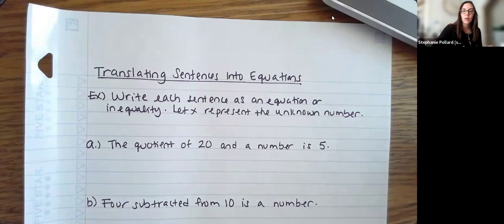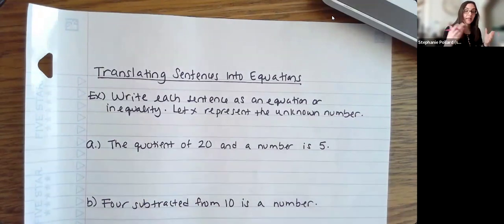So in this example, we're going to write each sentence as an equation or inequality, and we'll let x represent the unknown number in these examples. So the change here is, or I guess the key thing here I should say,